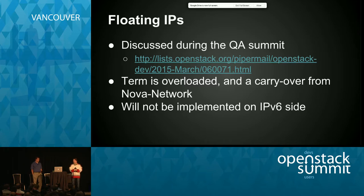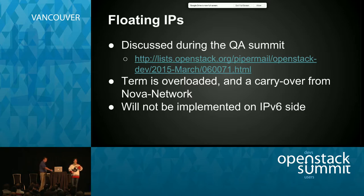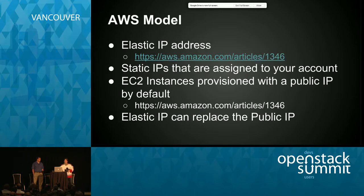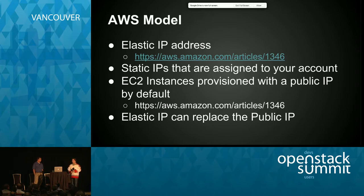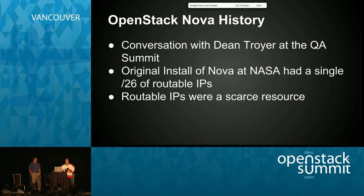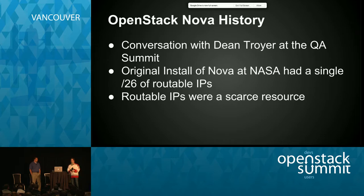When I was at the QA Summit, I had a great conversation with Sean Digg and Dean Troyer, and we got into a discussion about networking. Dean told us about how they had done Nova Network when they were at NASA. Floating IPs is an overloaded term that has two different concepts put together. Part of it is the elastic IP model from Amazon Web Services — the idea that you can quickly re-IP instances without any sort of interruption from the client side. Usually when you create an instance you get a routable IPv4 address and then you can use the elastic IP functionality to apply that elastic IP over top.